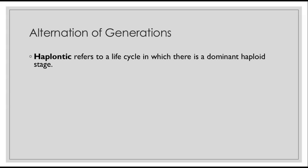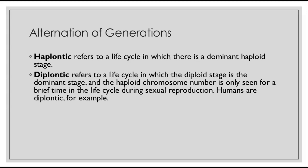Let's talk about alternation of generations. The term haplontic refers to a life cycle with a dominant haploid stage. Diplontic refers to a life cycle where the diploid stage is dominant, and the haploid chromosome number is only seen briefly during sexual reproduction — humans are diplontic. Haploid means half the chromosome number, and diploid means the full amount, or two copies. In humans, sperm and egg are the haploid cells; they fuse to form a diploid zygote.